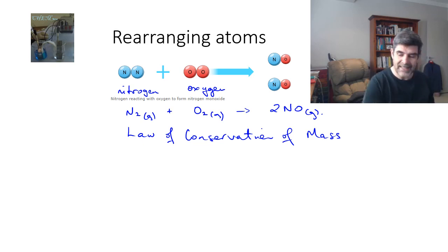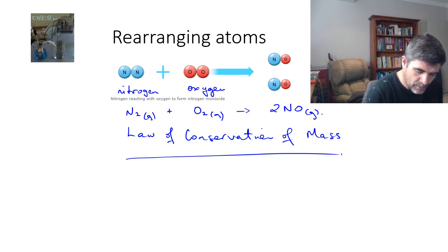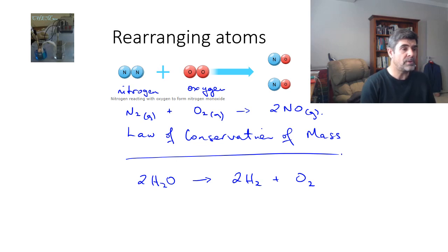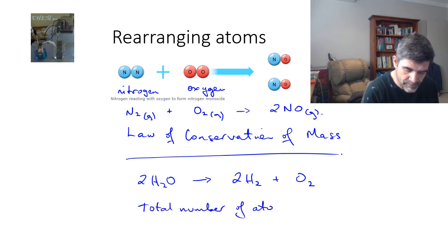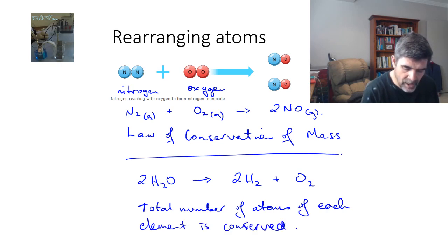It also means that we could write down this particular reaction that I've just looked at for you, which is 2H2O forming 2H2 plus O2. The important thing when you're looking at these types of models is to remember that the total number of atoms of each element is conserved. We know we can rearrange them. That's part of our definition of a chemical reaction, but we need to make sure that they have been conserved so that the total numbers of each one are the same on either side of the arrow, which you consider it's kind of like an equal sign, as you would in mathematics.